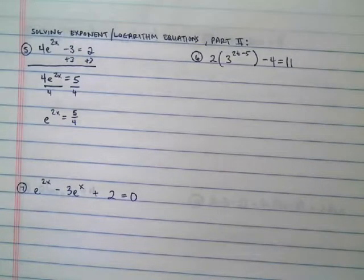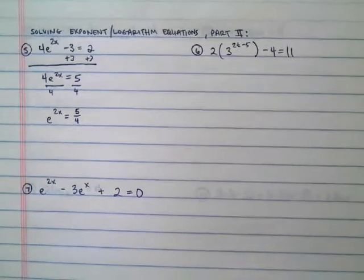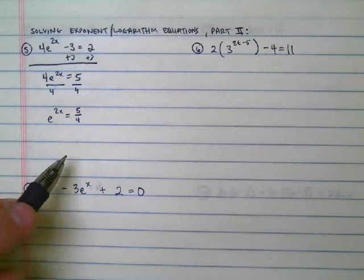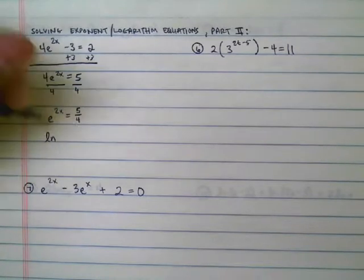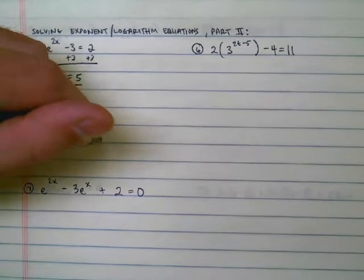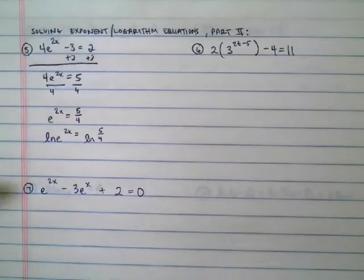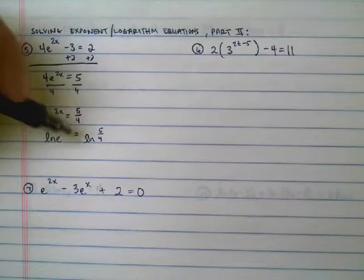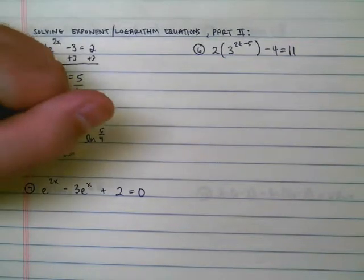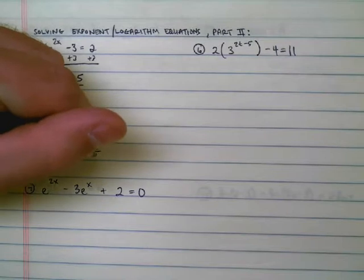Now comes the important step. If I have e^(2x) = 5/4, my next step, the crucial step, is to take the natural log of both sides. By doing this, I have the natural log of e, those two cancel out, and I'm left with 2x = ln(5/4).